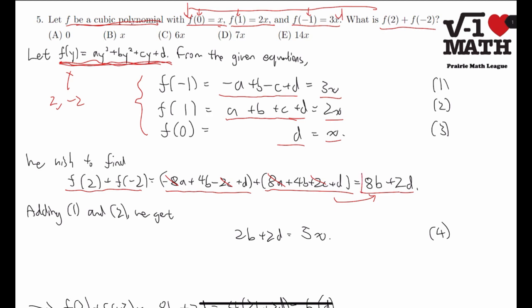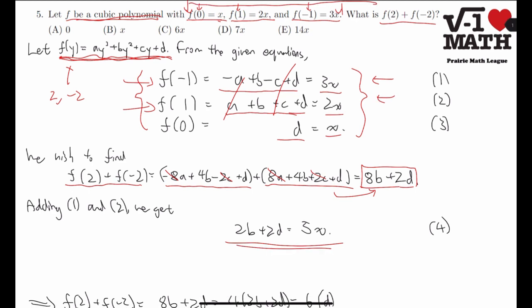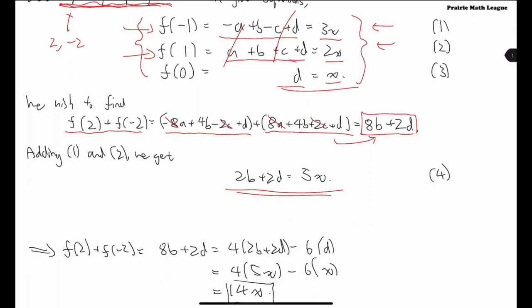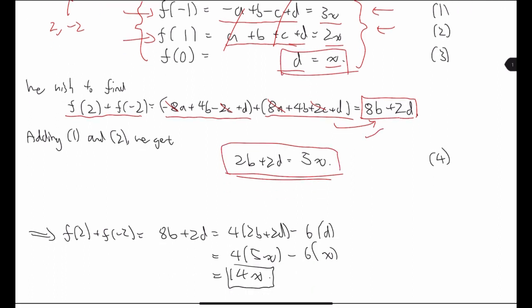Now, we wish to get this kind of thing from this system of equations that we have here. Notice that if we add these two equations, we can get rid of these pesky a and c terms. And we instead get, so we're adding these two, and we get 2b plus 2d equals 5x. And we also have d equals x.